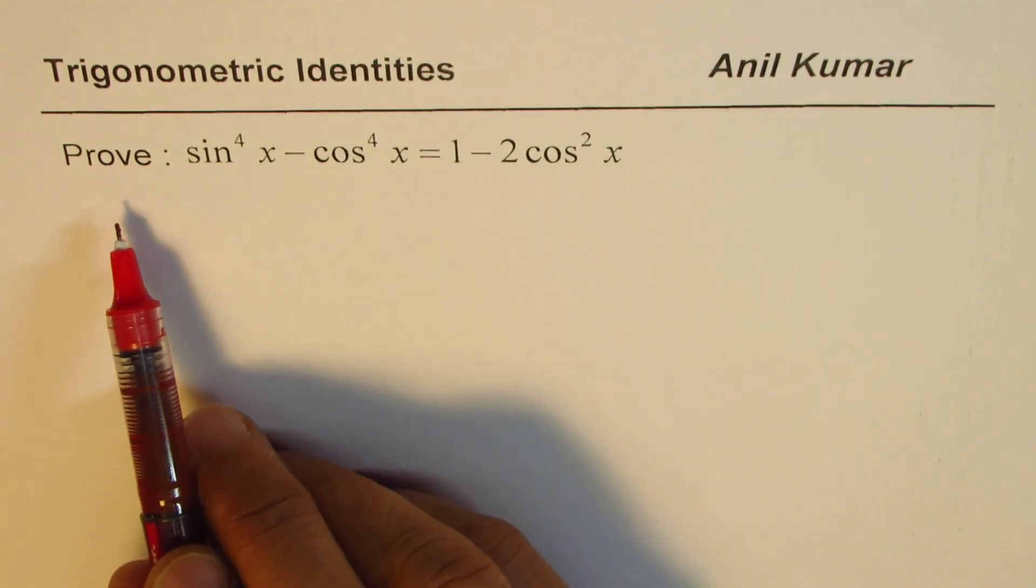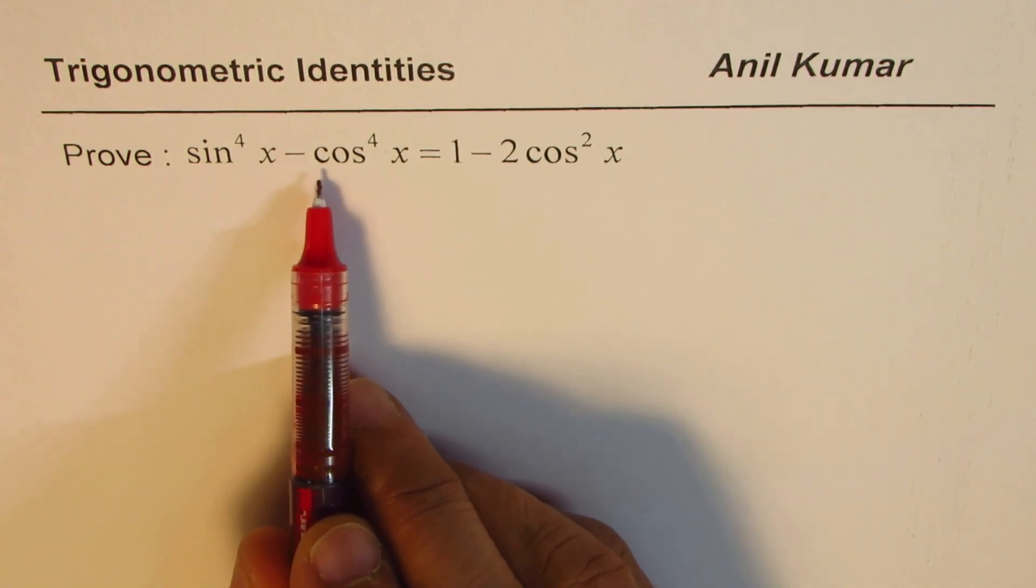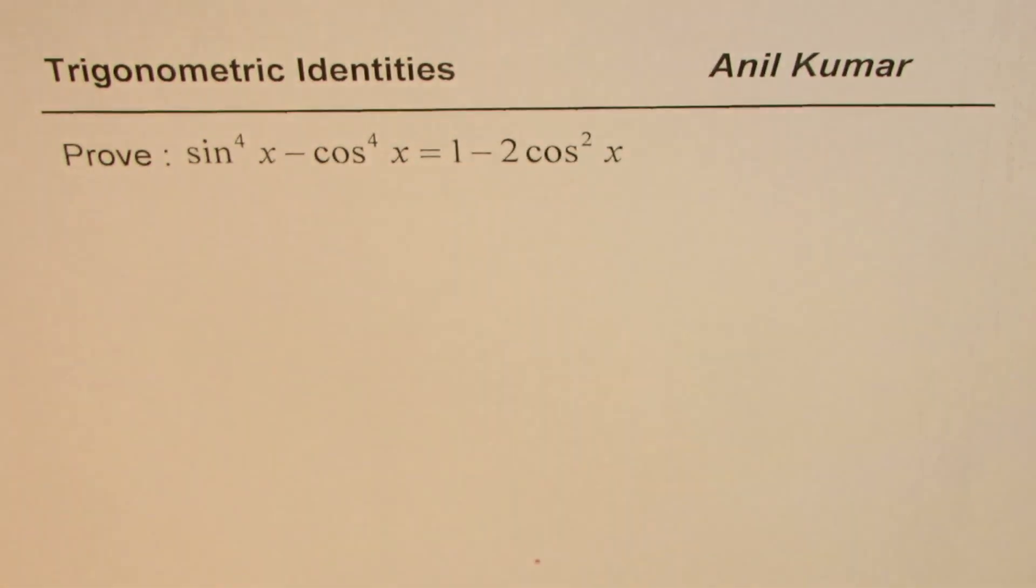The question here is prove sin⁴x minus cos⁴x equals 1 minus 2cos²x. That's the identity for you.